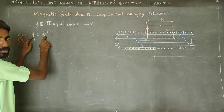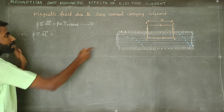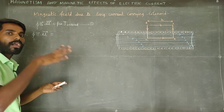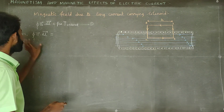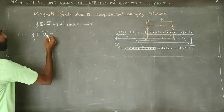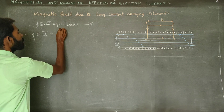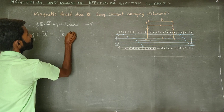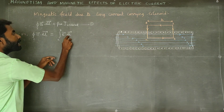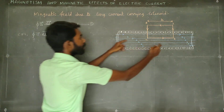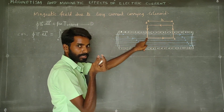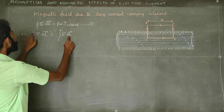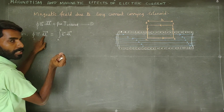Looking more closely at the closed loop, we take the four lines and expand the left-hand side. We take each segment — AB, BC, CD, DA — and for a small element dL in this loop, this dL is a small element along each side of the rectangular Amperian loop.